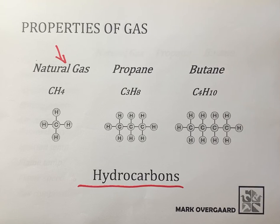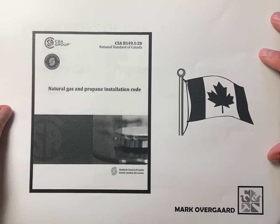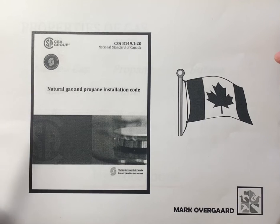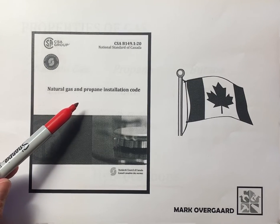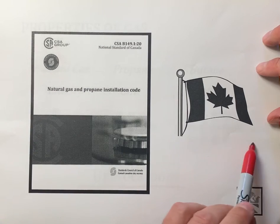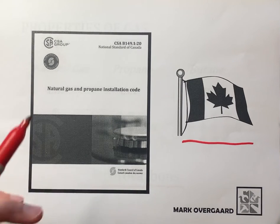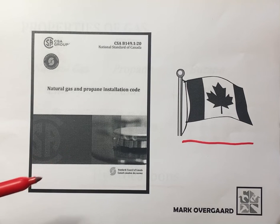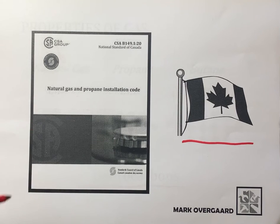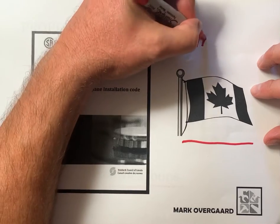Just so everyone watching is aware: the numbers we're going to go through today on properties of gas are taken from the Natural Gas and Propane Installation Code, the CSA B149.1. This is a Canadian code, so for our American friends watching, some of these properties should be the same, but you may have slightly different numbers. Keep that in mind — all these numbers come from CSA B149, specifically from the back in what's called the Annex, kind of like the appendix.